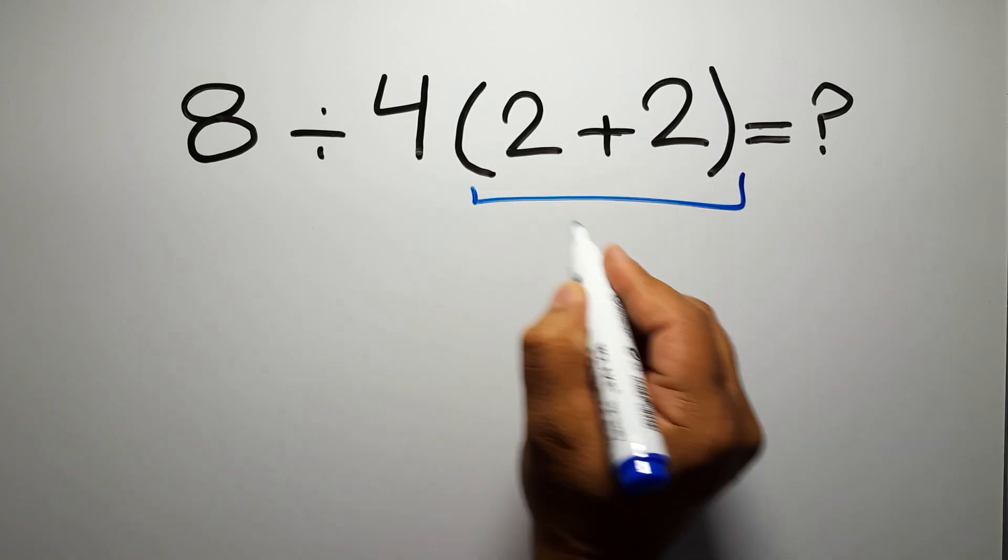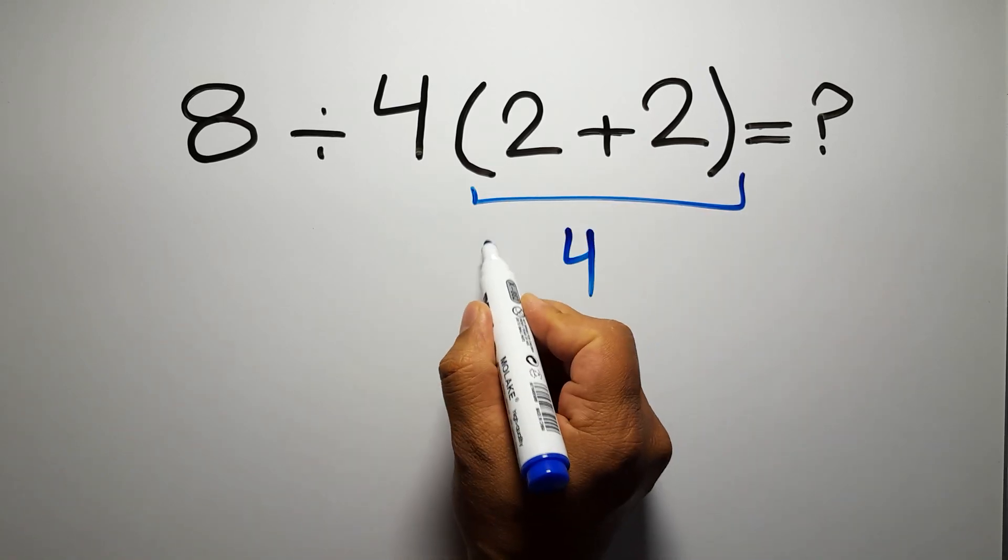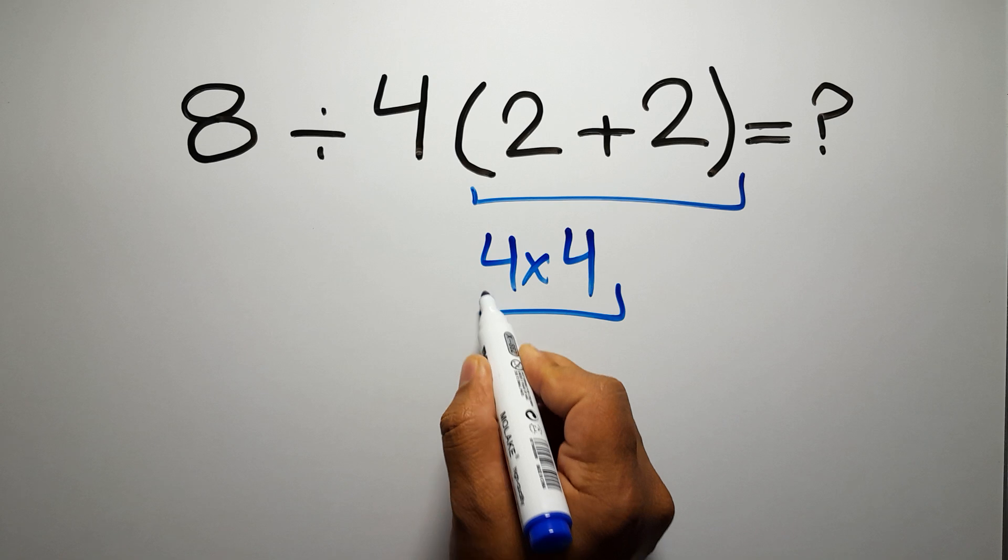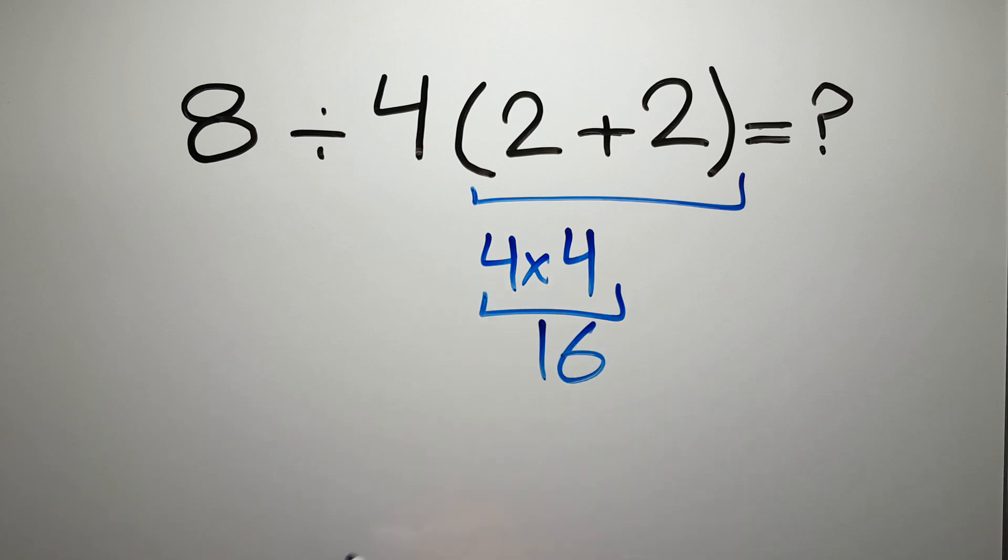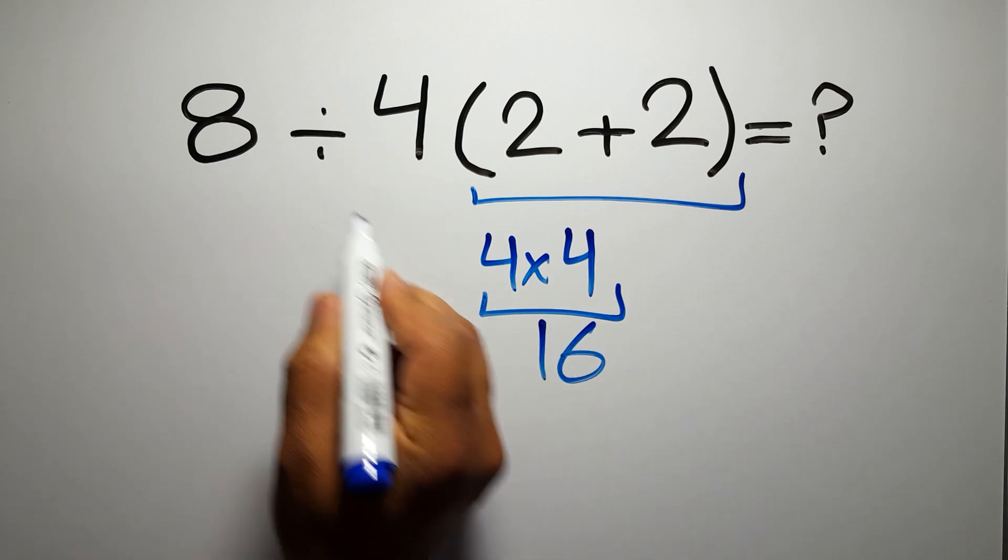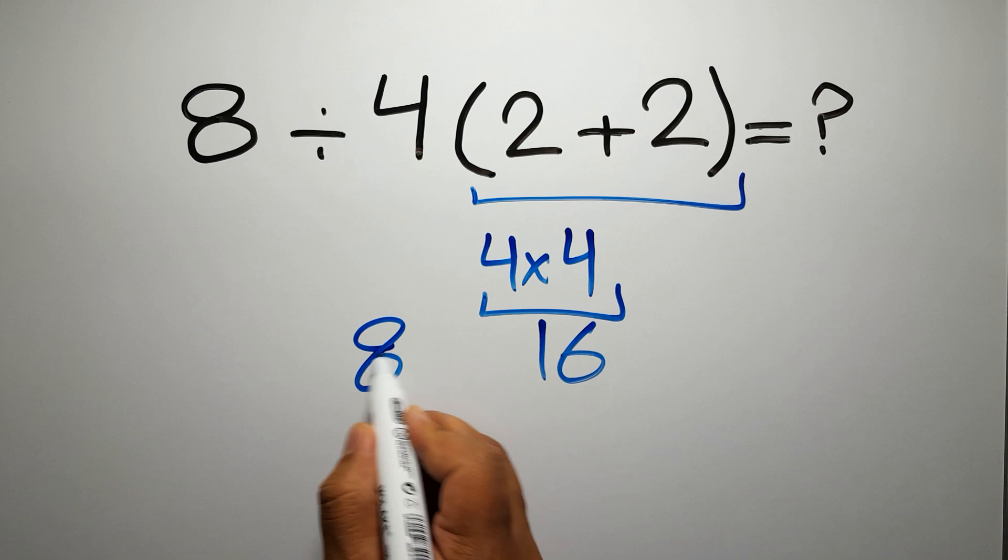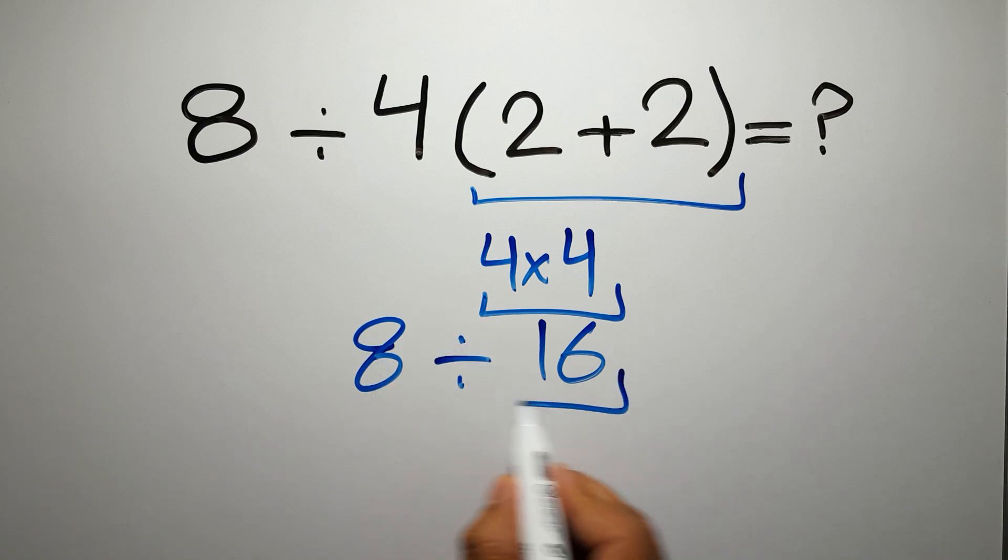2 plus 2 is just 4, and 4 times 4 gives us 16. So, 8 divided by this, 8 divided by 16, is just 0.5.